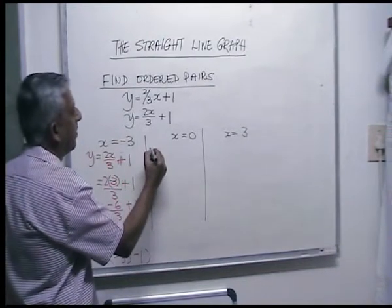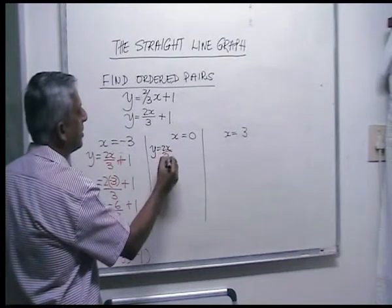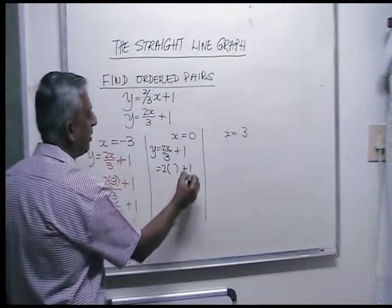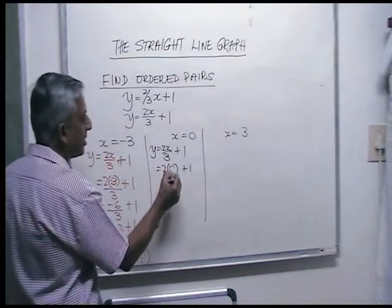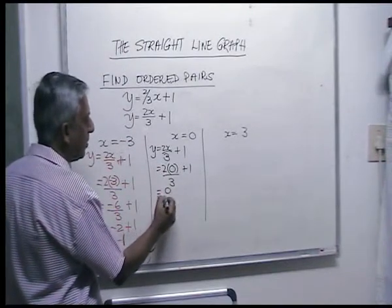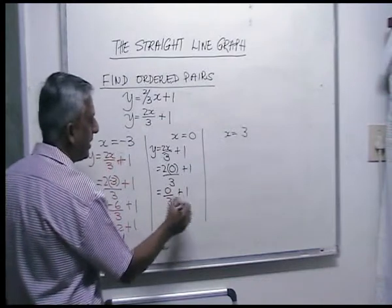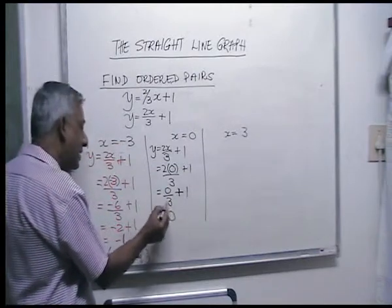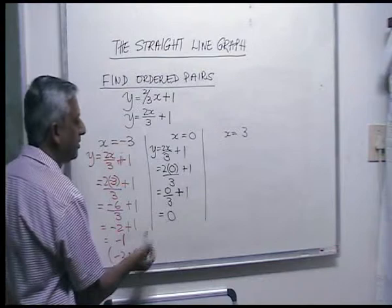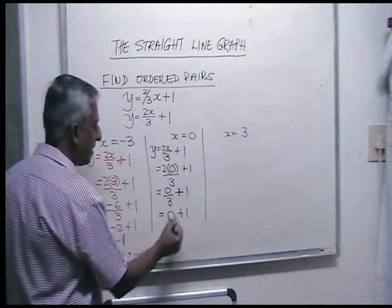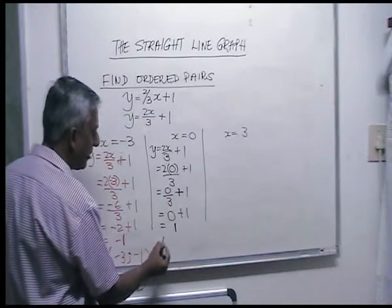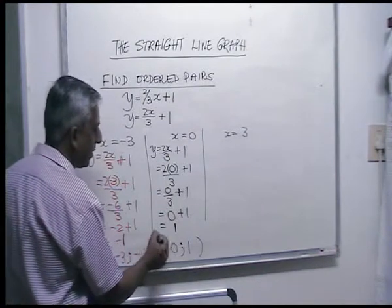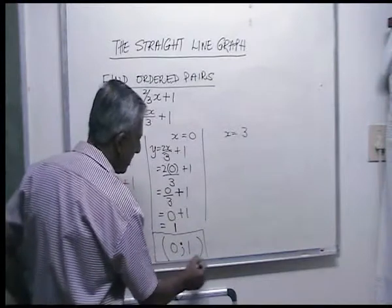For x is zero: two times zero is zero, over three plus one. Zero over three is zero — zero divided by any number is zero. So zero plus one is one. Your ordered pair is x is zero, y is one.